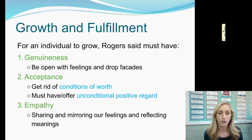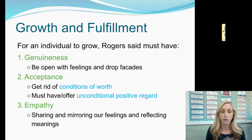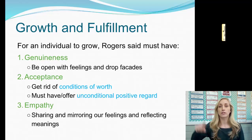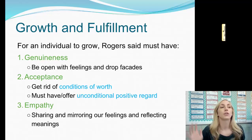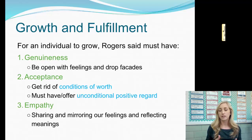For an individual to grow, Rogers said we must have three things. In order to have a positive self-concept, we need genuineness — being open with our feelings and dropping the facade of 'I'm hurting inside but putting on a good face.' Second is acceptance: we get rid of conditions of worth. Make sure you have it noted that we do not want conditions of worth placed on ourselves or placed on us by other people. For example, a son growing up with a dad who really wants him to be the ultimate football star. The son feels that unless he is succeeding in football and getting recognized by recruiters, his dad won't pay much attention to him and therefore won't love him outside of football.